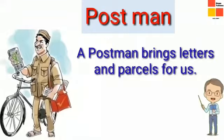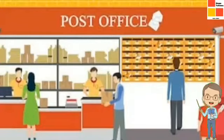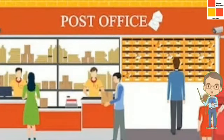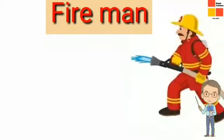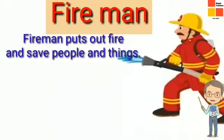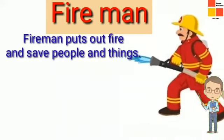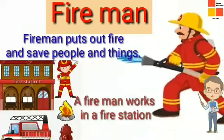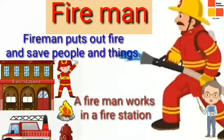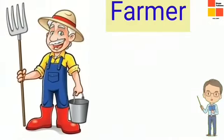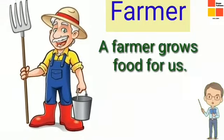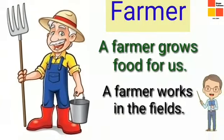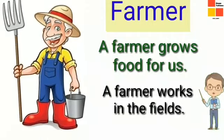Next, the postman. Nowadays they are becoming very less common. A postman brings letters and parcels for us. They work in a post office. Next, the fireman — the answer is right there in the name: fire. A fireman puts out fires and saves people and things. A fireman works in a fire station, which we also know as the fire brigade.